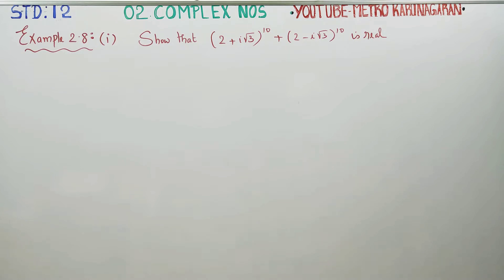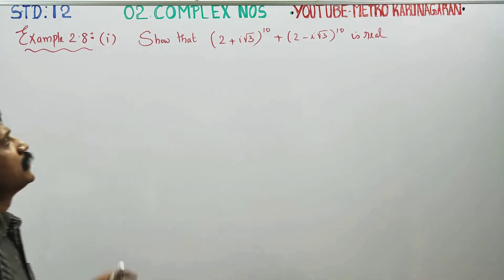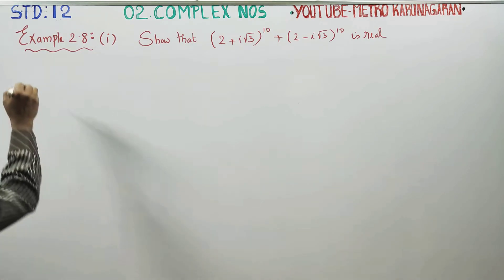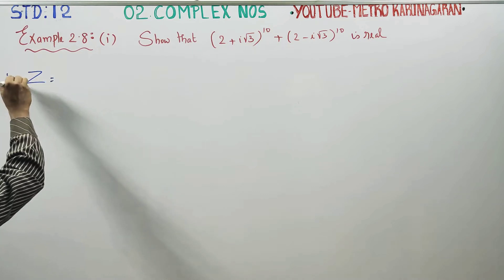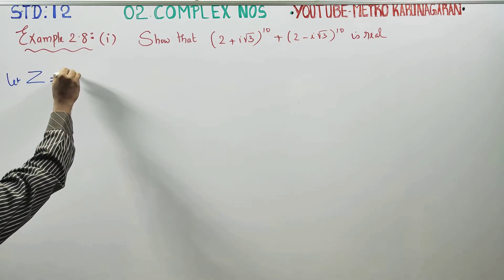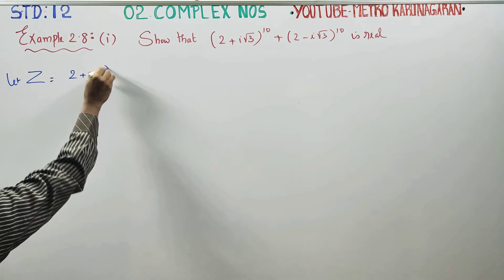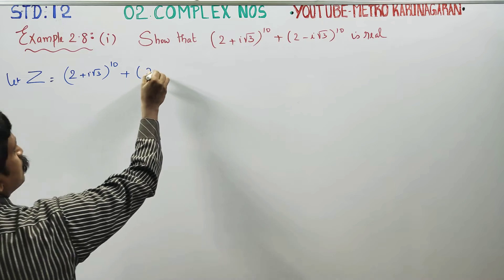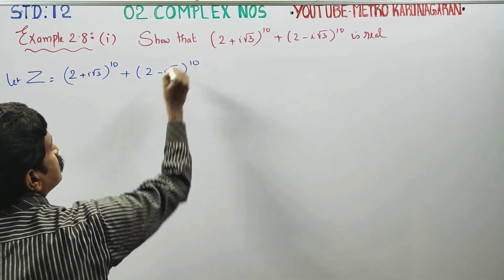In complex numbers, example 2.8, first subdivision, you have to show this complex number as a real number. Let z be equal to the complex number z₁: (2 + i√3)^10 + (2 - i√3)^10.